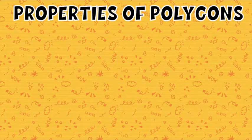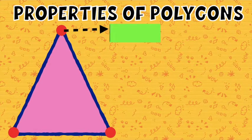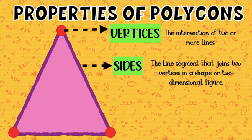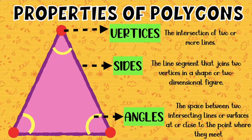Let's take a look at the properties of polygons. I have here this triangle. This triangle has three vertices. When you say vertices, children, it is the intersection of two or more lines. And this triangle has three sides — the line segment that joins two vertices in a shape or two-dimensional figure. And this triangle consists of three angles. When you say angles, that is the space between two intersecting lines or surfaces at or close to the point where they meet.